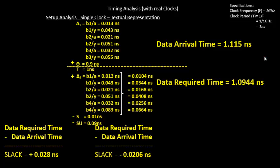In the last video we implemented the concept of OCV on setup timing analysis and got a negative slack, which is a thing to worry about. The system we expected to run at 1 GHz, because of this negative slack, might now run at a lower frequency, say 980 or 970 MHz.